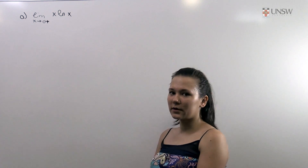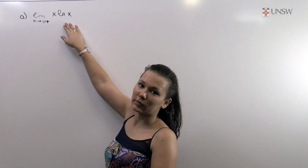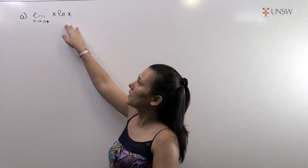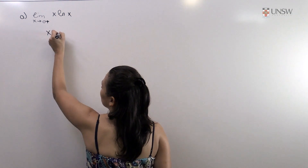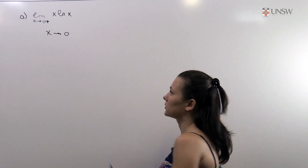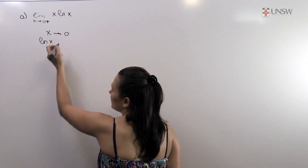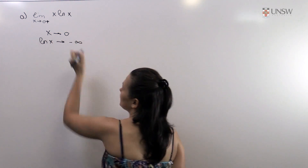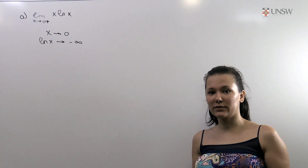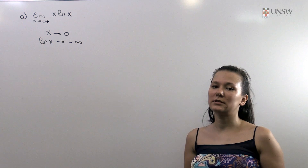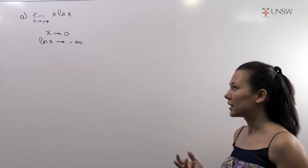We need to find the right-hand limit of the function x·ln(x). Separately, when x goes to zero, x of course goes to zero, but ln(x) goes to minus infinity. And so our limit is of the type zero times infinity, and we cannot solve this limit directly. We need to rewrite it a bit.